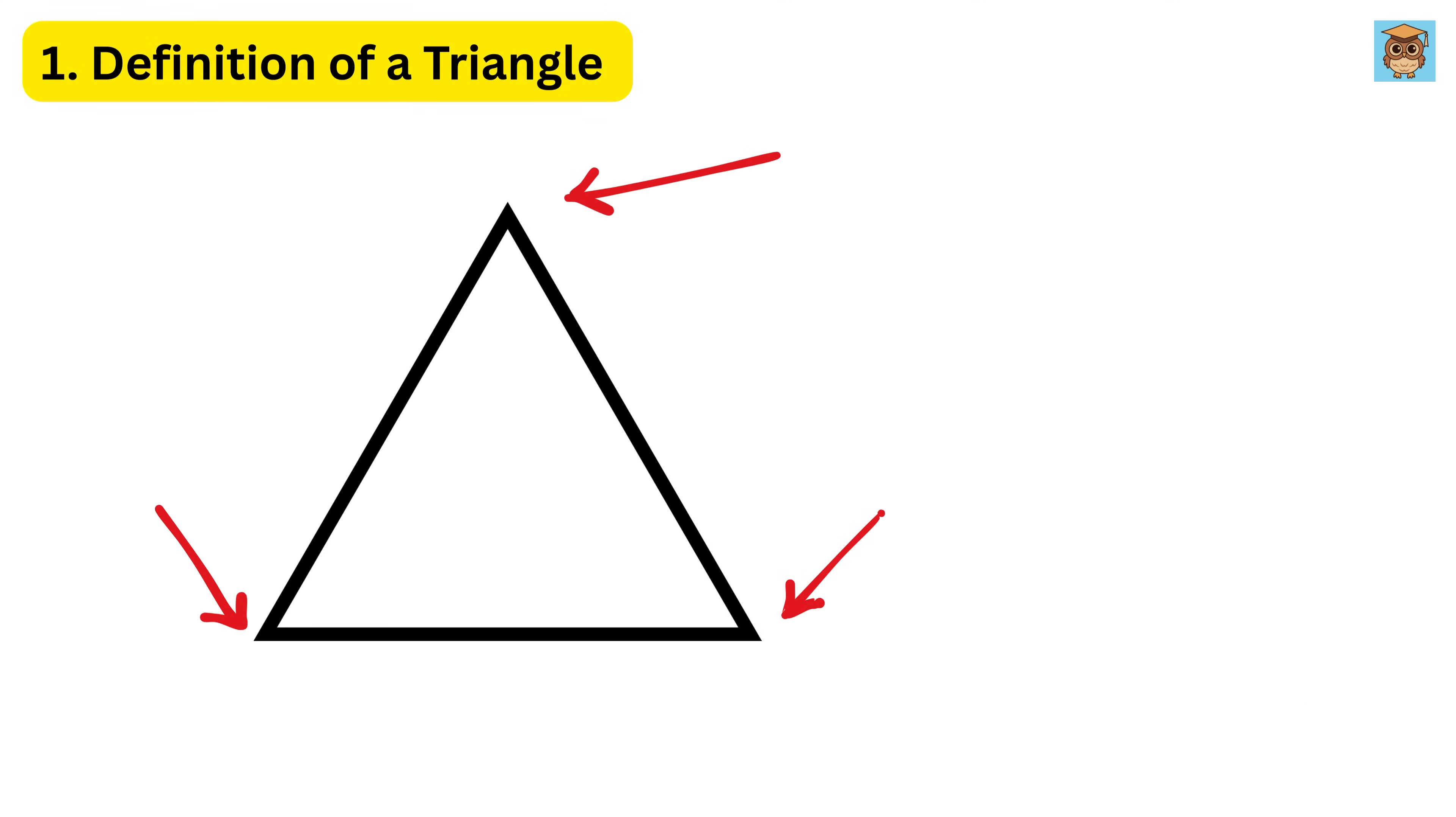It is one of the simplest shapes in geometry. These are the corners also called vertices, or triangles, and these three lines are three sides of the triangle. Now, inside every triangle, there are three angles, one at each corner.